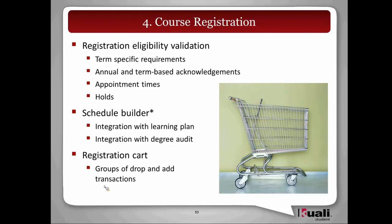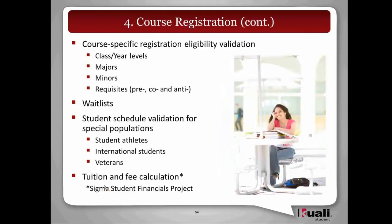The actual registration activity is going to be done through a registration cart concept. The cart is a group of drop and add transactions that the student would like to submit — here are the classes I want to add, here are the classes I want to drop. It's very much like Amazon and other web-based systems use. Once the student attempts to register for an individual course or registration offering, we'll check specific registration eligibility: class and year levels — junior, senior, first through fourth year — majors, minors, any requisites — pre, co, or anti. Those eligibility validations are done against the offering, not against the canonical.